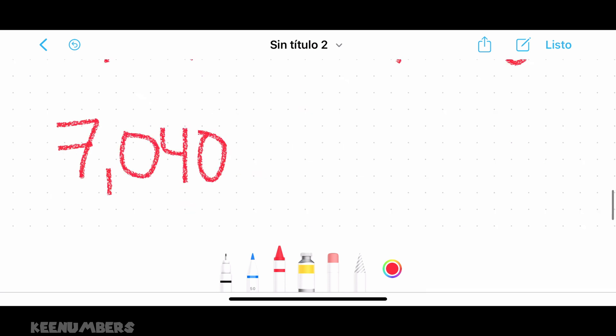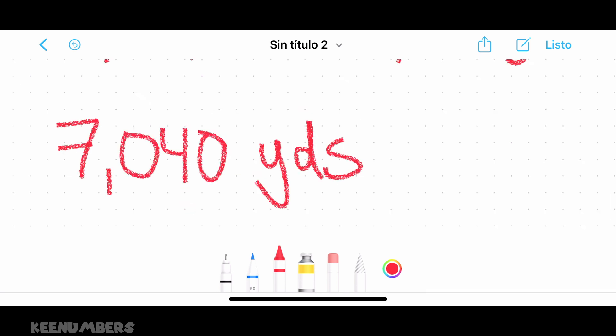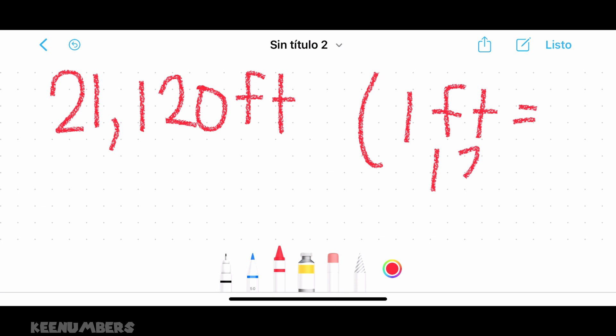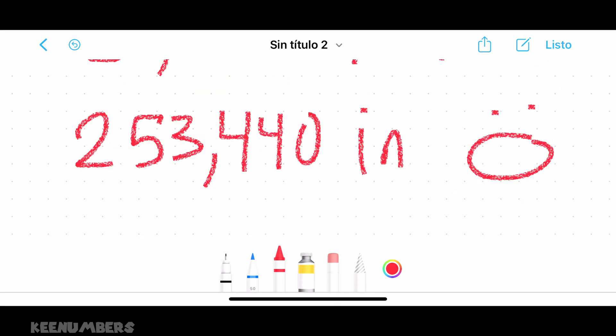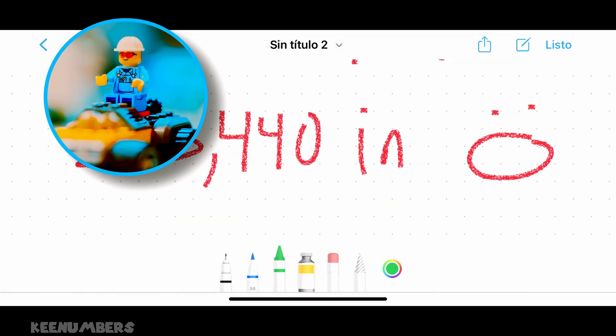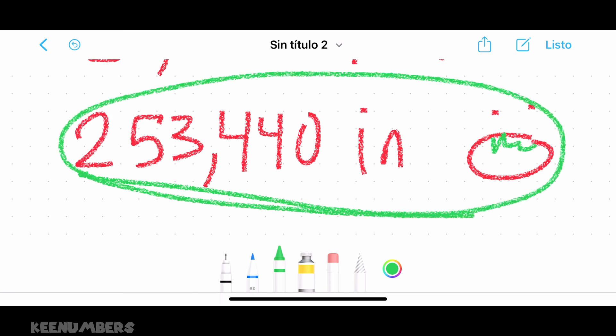So four miles is equal to 7,040 yards, or 21,120 feet, or 253,440 inches. Woohoo!